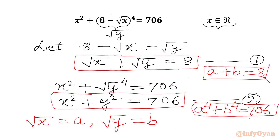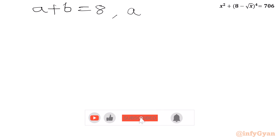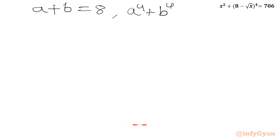Now we will solve this new system of equations: a plus b equal to 8, and a power 4 plus b power 4 equal to 706, with substitution root x equal to a and root y equal to b. Let us solve. So I will write a plus b equal to 8 and a power 4 plus b power 4 equal to 706.